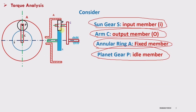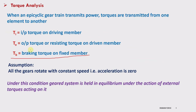When you fix gear A and apply input at the sun gear, it will rotate gear P, and P is in mesh with A, so it will try to rotate A. But A will not rotate because it is fixed. So P is exerting some torque on A, but A is not rotating — meaning A is exerting an equal and opposite torque on P. That torque is called the resisting torque or holding torque — torque on the fixed member.